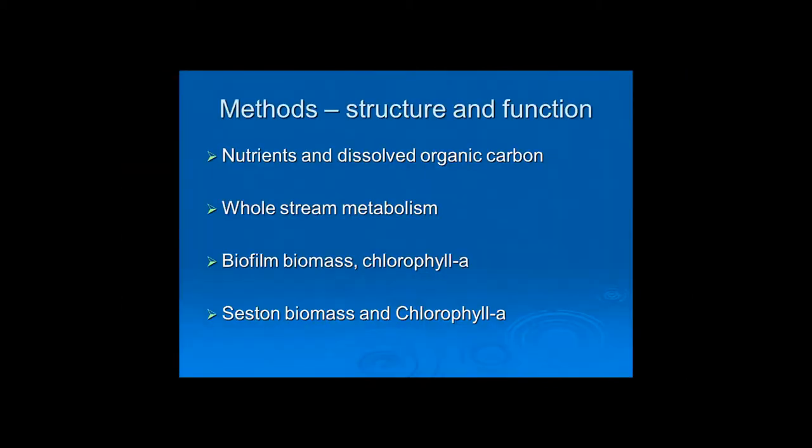We looked at nutrients and in particular dissolved organic carbon coming off the floodplain. We looked at whole stream metabolism — that's primary production and community respiration. We looked at biofilm biomass and chlorophyll A. Biofilm is the algae, bacteria and fungi that grows on surfaces like snags. And the ceston biomass and chlorophyll A — ceston is basically the material floating in-stream, including plankton, organic matter, and sediment. To study food webs we use stable isotope analysis, which provides a biomarker indicating where the basal energy or carbon is coming from to feed the system.